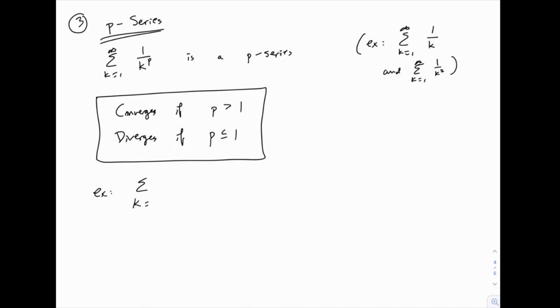So for example, here's one that is written in that form, 1 over k to the fourth. We know immediately that converges, because the value of p is greater than 1.